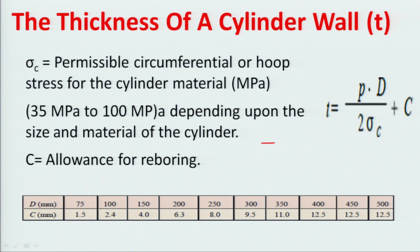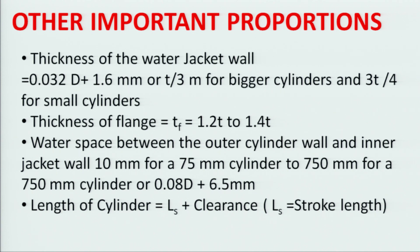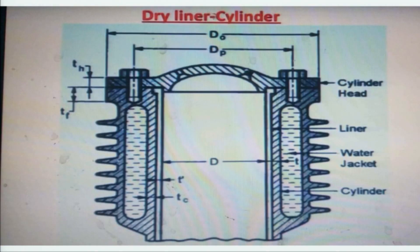From σC = Pd / 2t, the cylinder wall thickness t = Pd / (2σC) + c, where c is the reboring factor — a small extra thickness kept so that if the cylinder needs to be rebored, there is still some material remaining.